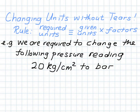We are required to change units from 20 kilogram per cm squared to bar. The simple rule to follow when doing conversions is to write the required units you need on the left, which will give an equivalent of our existing units, plus any factors for conversion.